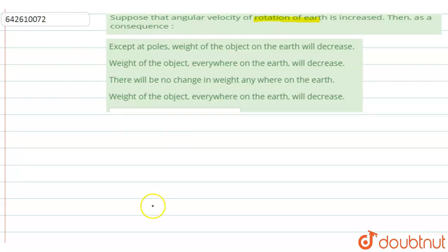In all four options, it is asking about the weight. So let's suppose I am making Earth here. Suppose this is our Earth, this is the center, and this is a latitude lambda. So at this point, suppose this is g.